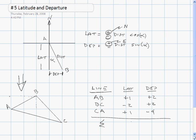We take the sum. So on a closed traverse, the sum of the latitudes equals 0, and the sum of the departures equals 0. Thanks.